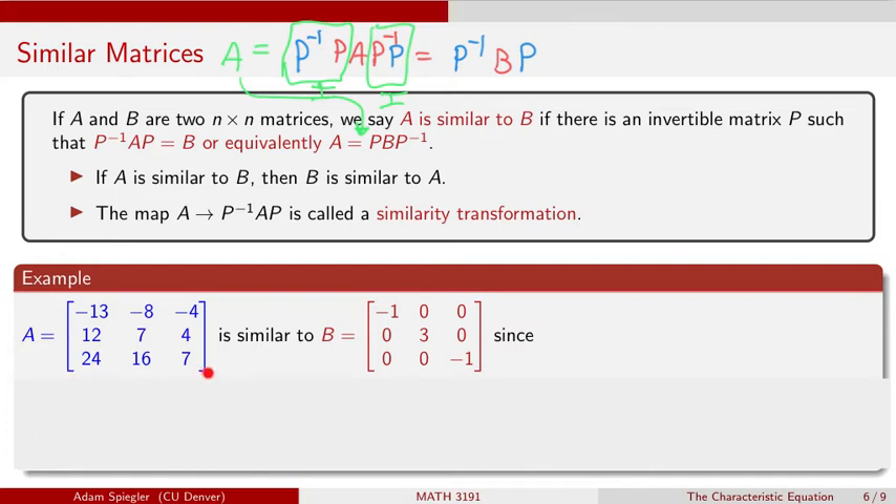and we just have three non-zero entries which all sit on the main diagonal. I've got this 3 by 3 matrix A that I'm going to show is similar to this diagonal matrix B that has entries -1, 3, and -1 on the main diagonal, and all other entries are 0.